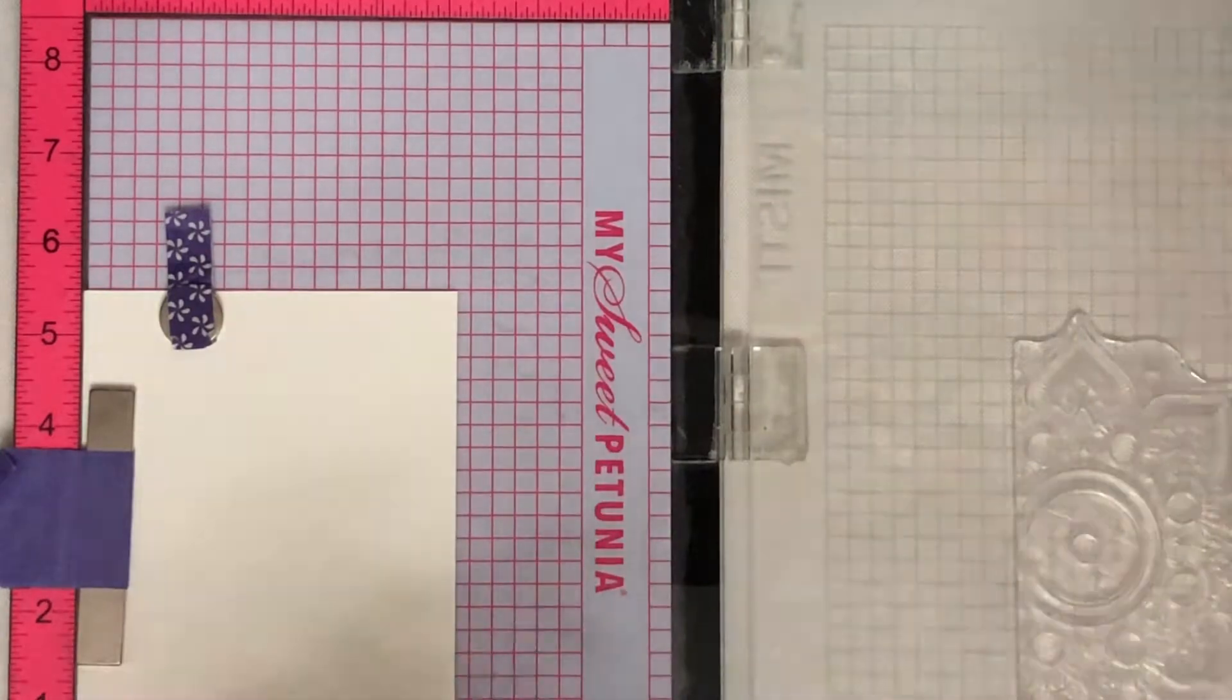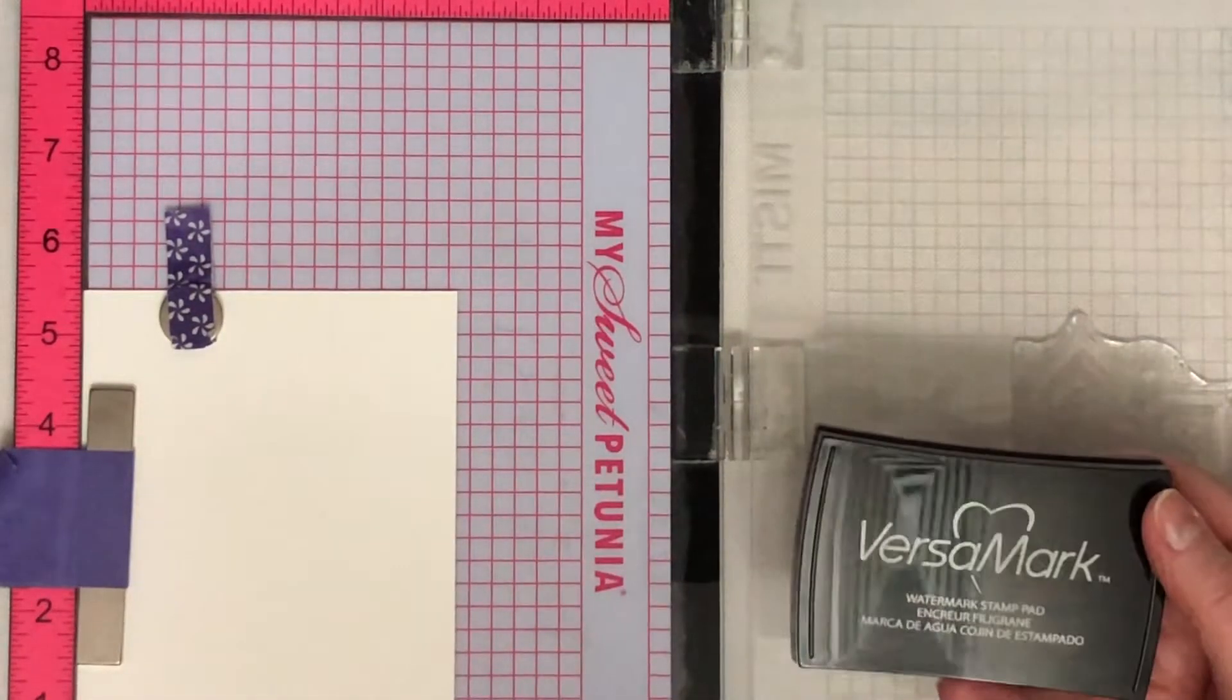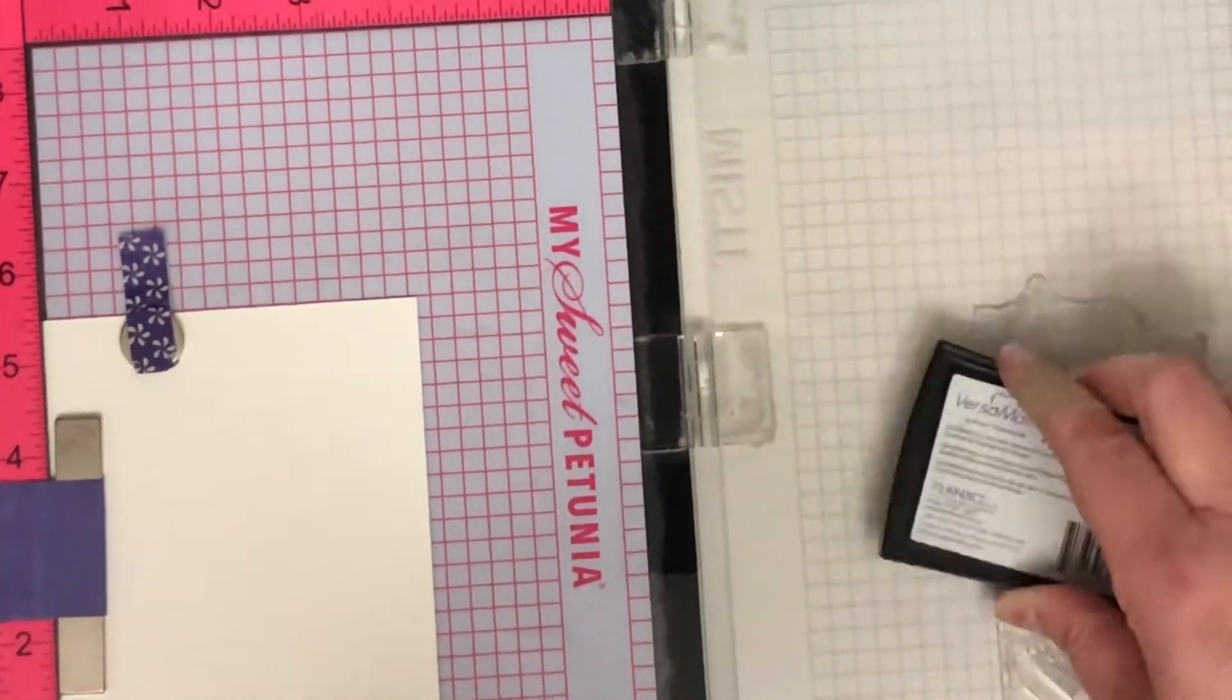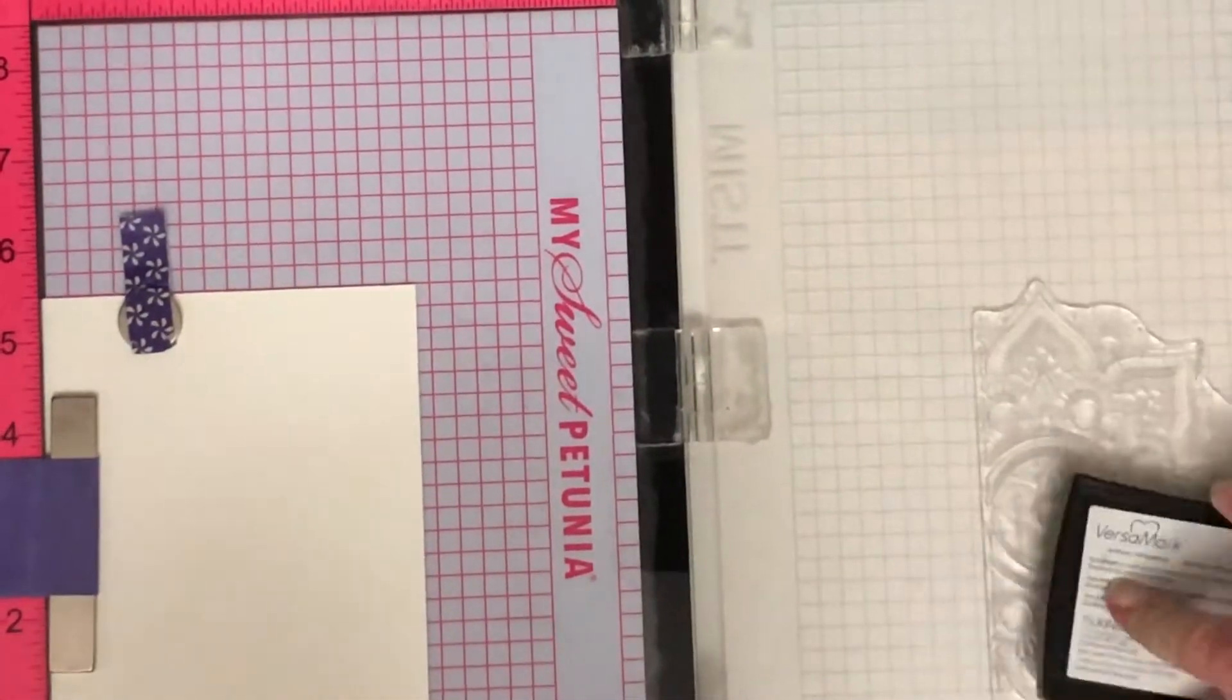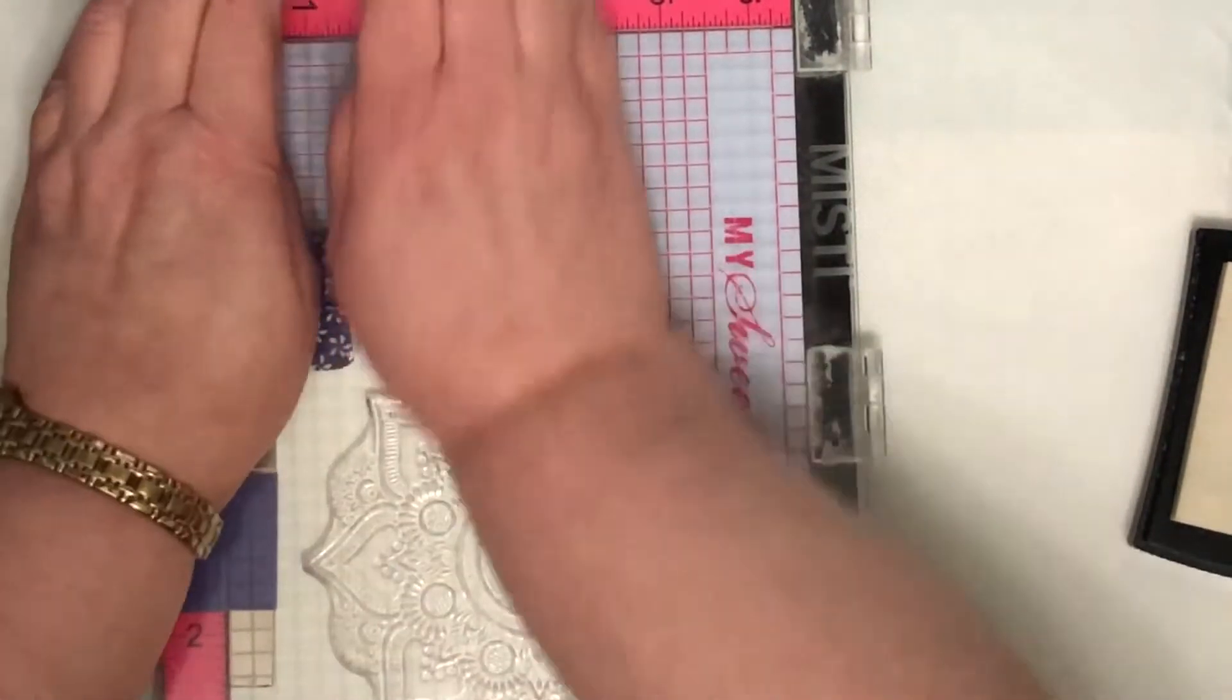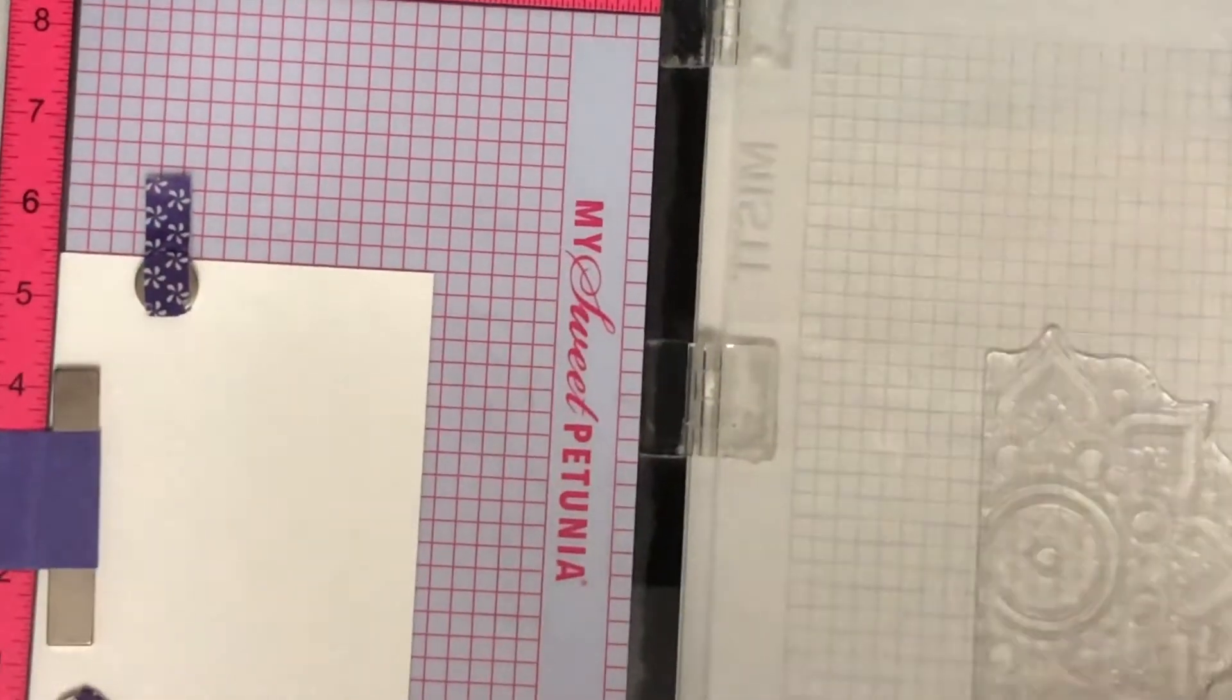I'm making sure to prep my cardstock with some anti-static powder tool because what I'm going to do is stamp with Versamark and then heat emboss onto this image. I don't want any of the embossing powder to stick where I don't want it to, and it quite often sticks where you've left fingerprints on the cardstock.